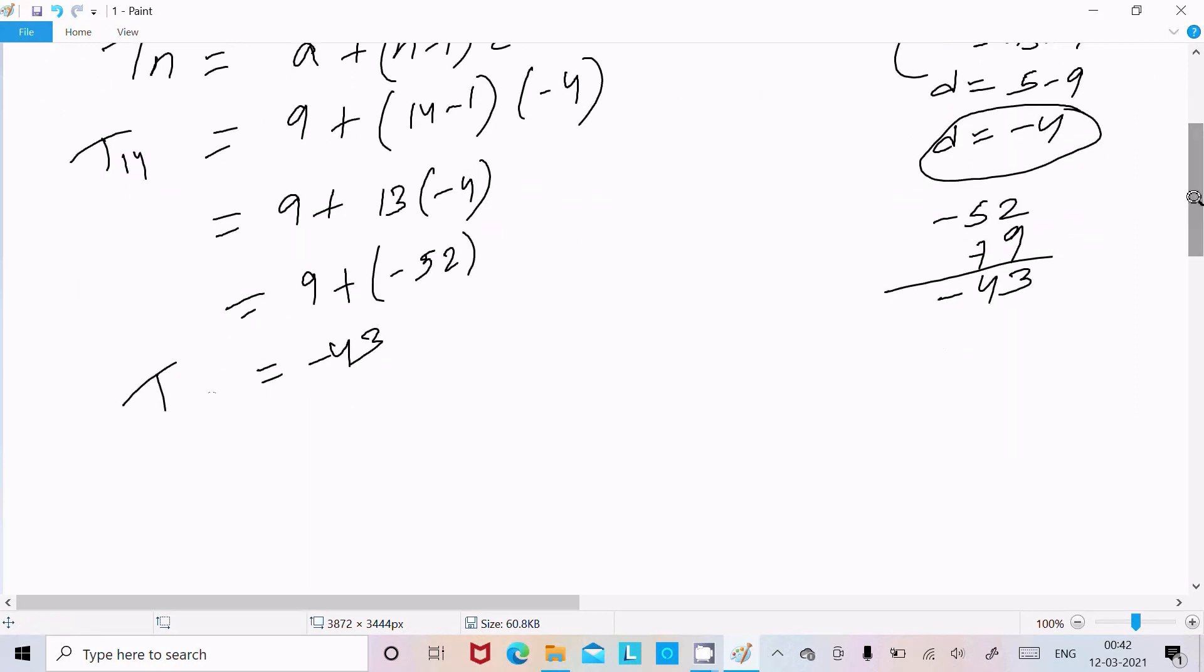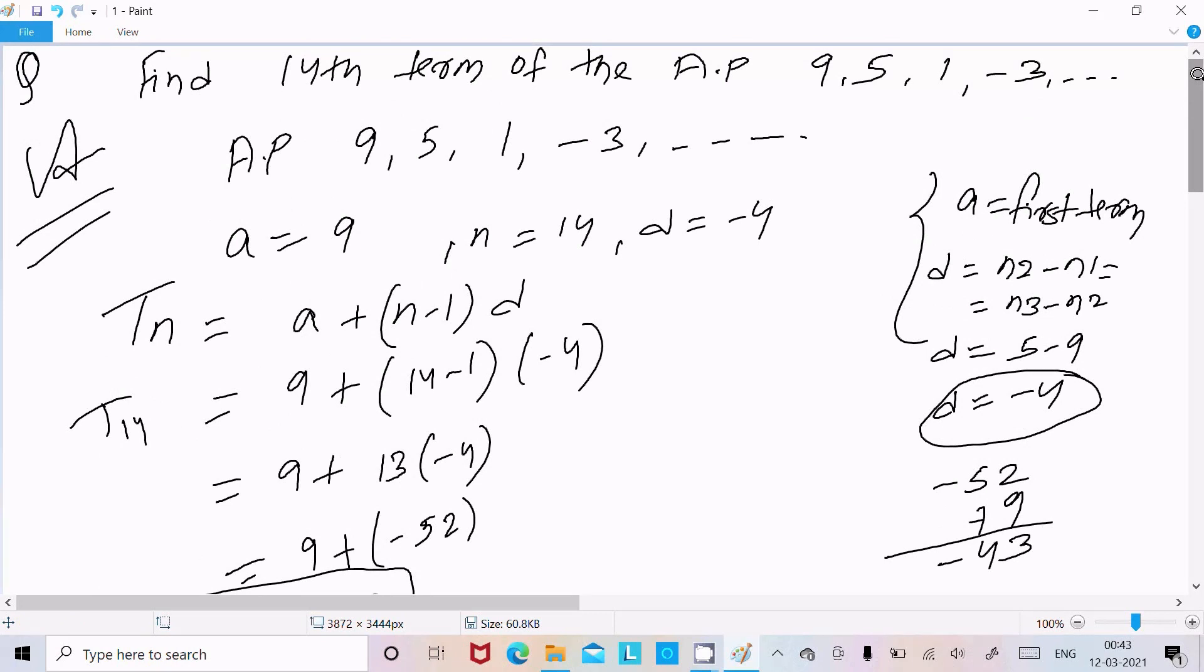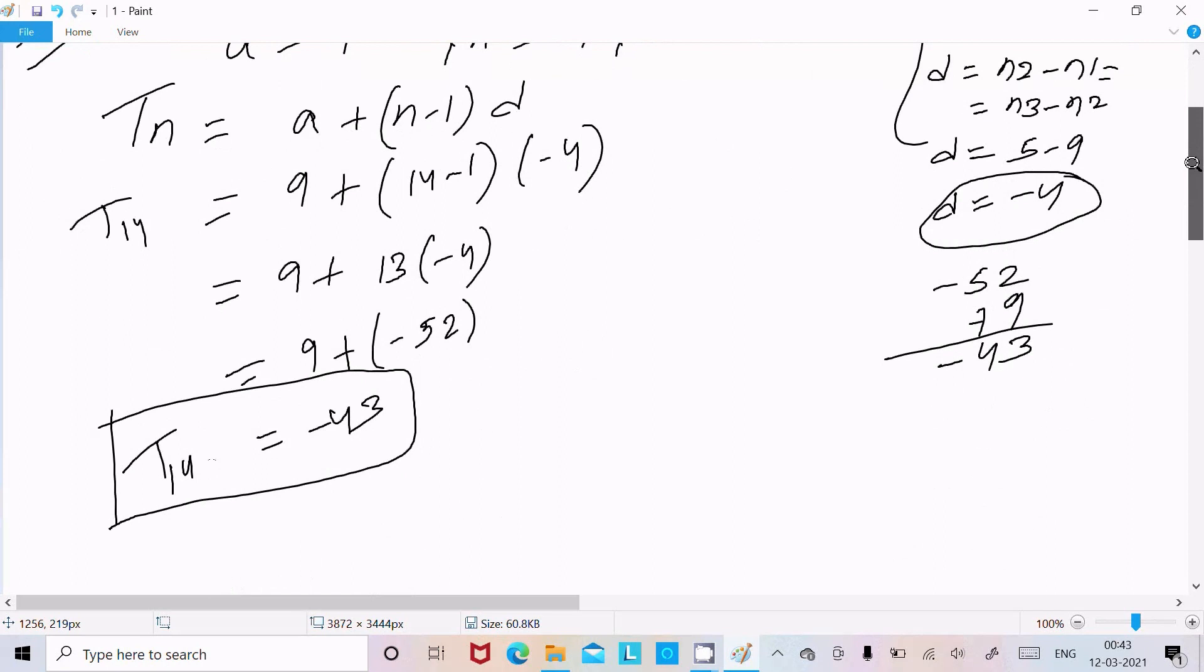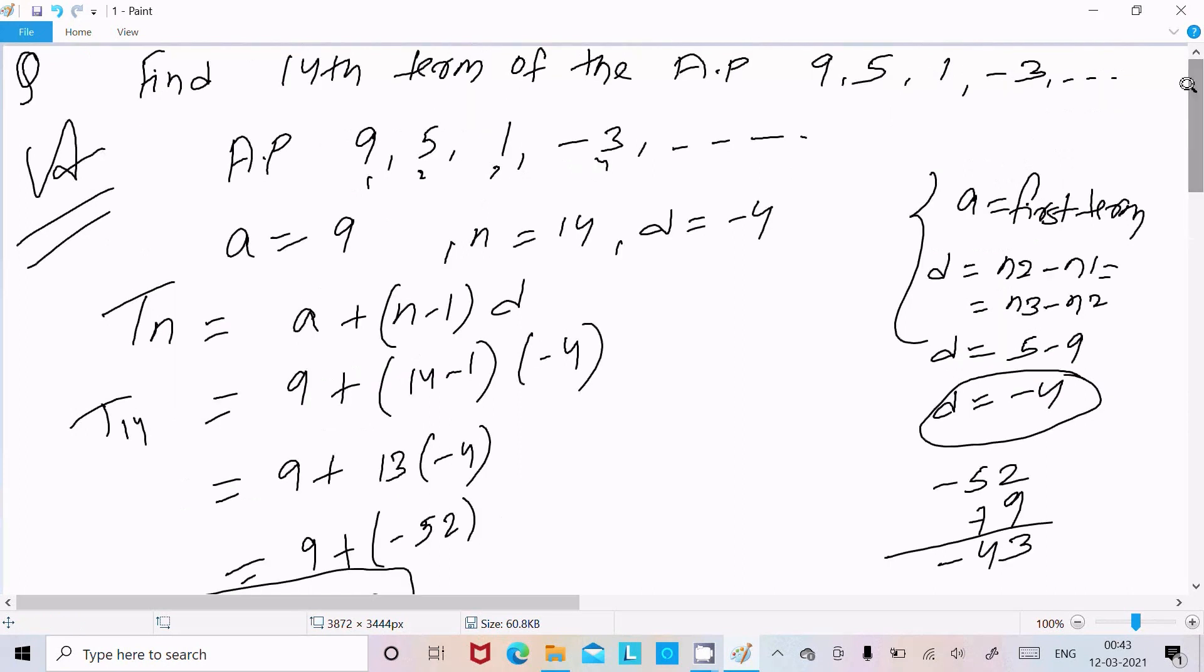So this is position 1, 2, 3, 4, and so on. When we reach position 14, the value is -43. This is how we can calculate the 14th term of the AP series.